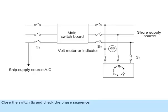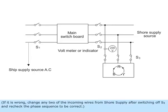Close the switch S3 and check the phase sequence. If it is wrong, change any two of the incoming wires from the shore supply after switching off S3 and recheck the phase sequence to be correct.